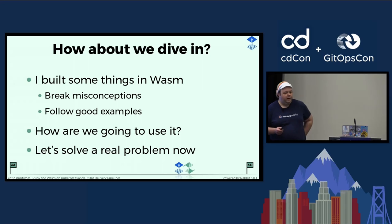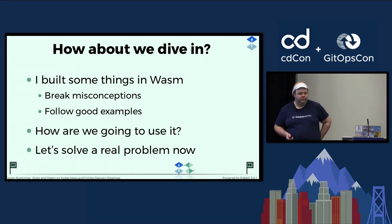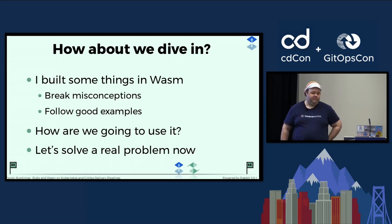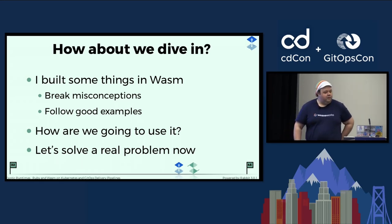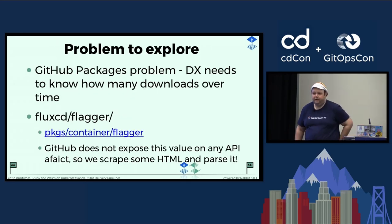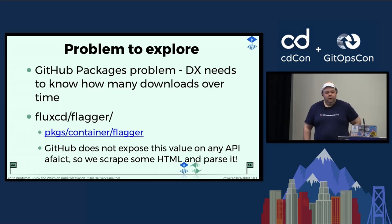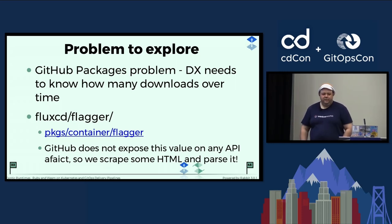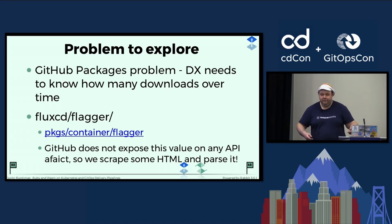So I built some things to help me break my misconceptions and understand what I was doing. Spin is a great example — they have tons of examples for Ruby, and if you read every document from Spin, I think you will not regret a second of that. Here's the real problem I'm solving: we need to know how many downloads our OCI packages have. GitHub has a number on a page that tells you exactly how many downloads at that moment in time, but it doesn't seem to be exposed on any API. So we're going to parse it from the HTML.